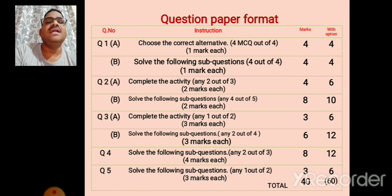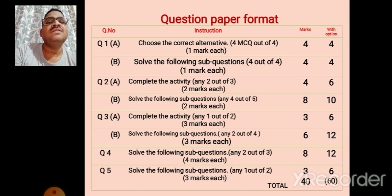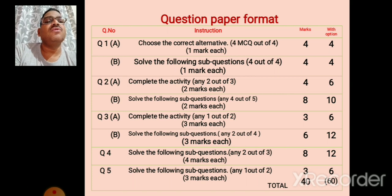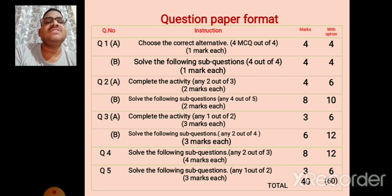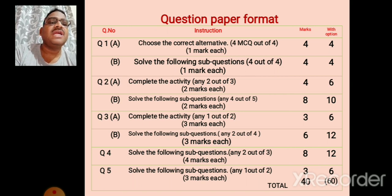Question number 3 again has two sub-parts A and B. In part A, complete the activity: two activities are given and you have to complete one activity, three marks for each. Then question number 3B, solve the following sub-questions: any two out of four, three marks each. Then question number 4: any two out of three sub-questions are to be solved, four marks for each.